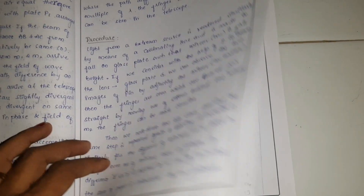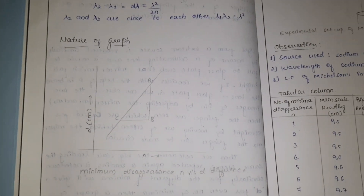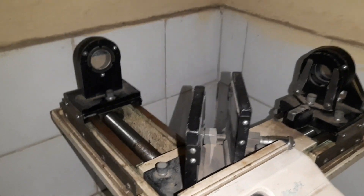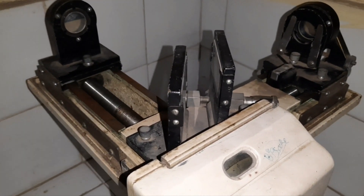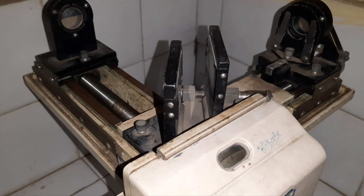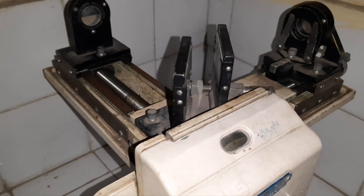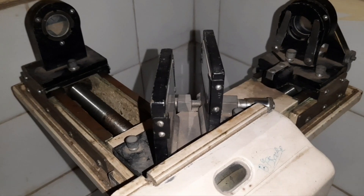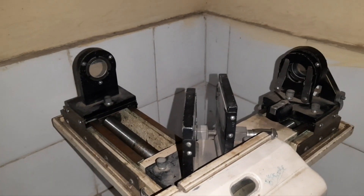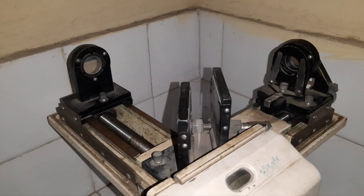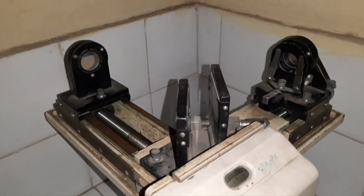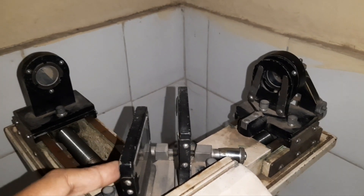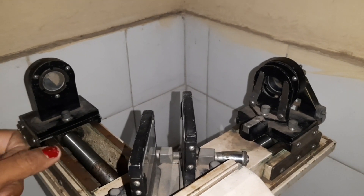This is the nature of the graph you will get if you plot the value of D versus N. Whenever light falls on the glass plates in the Michelson interferometer, the source is divided into two parts of equal intensities by partial reflection. These beams are sent in two directions at right angles to each other. We need to understand how interference and the formation of fringes takes place when light from the sodium source falls on these glass plates.